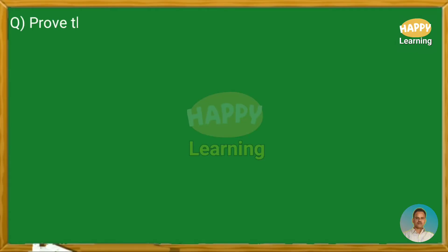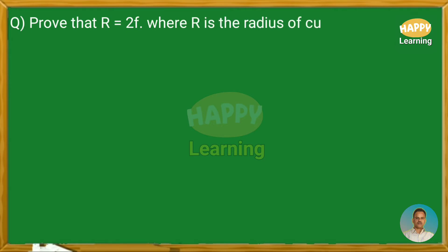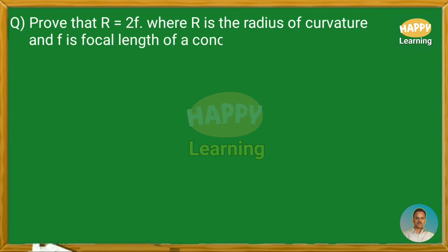Question: Prove that R is equal to 2F, where R is the radius of curvature and F is the focal length of a concave mirror.